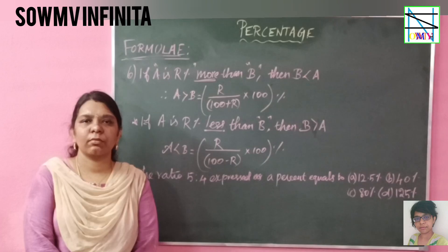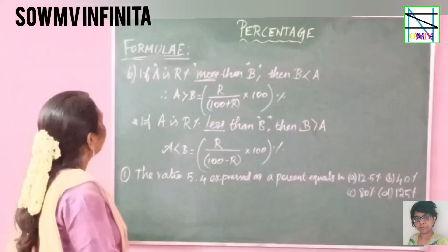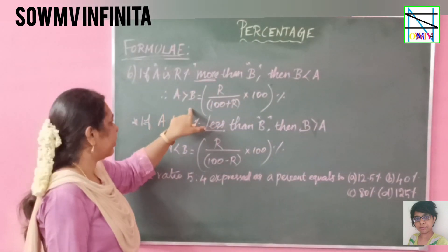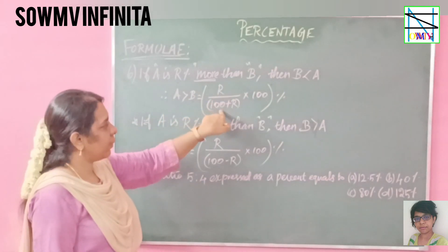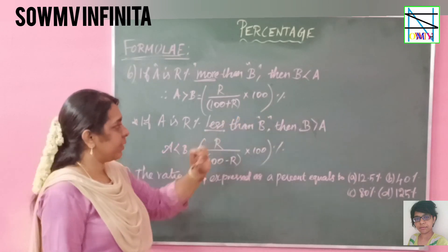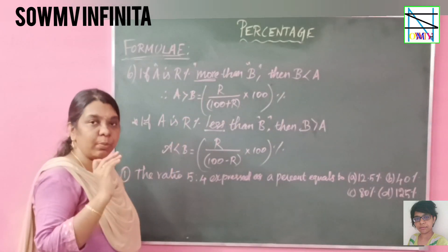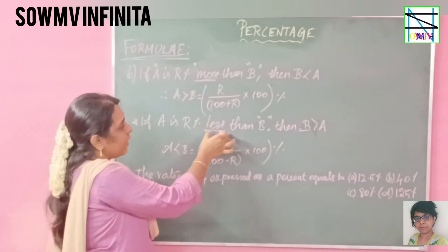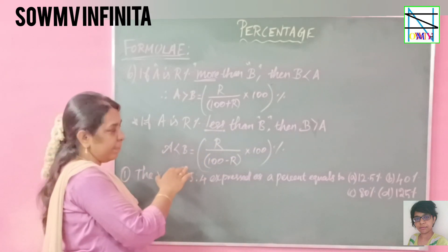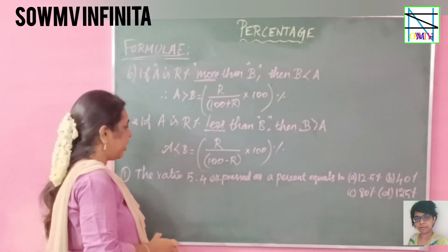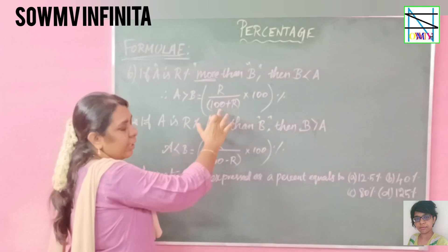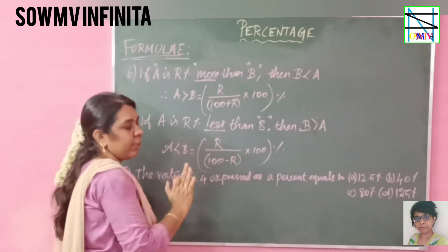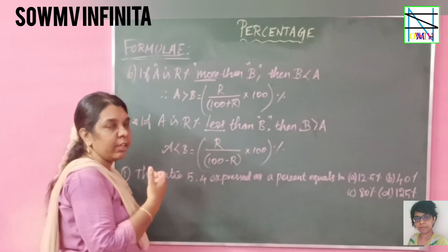The sixth formula: if A is R percent more than B, then B is less than A by R divided by 100 plus R, into 100%. The second condition: if A is R percent less than B, then B is greater than A by R divided by 100 minus R, into 100%. These are the formulas in percentage.